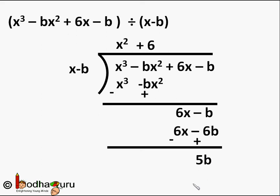And that is exactly what we got before — 5b as the remainder. So we proved the Remainder Theorem really gives us the remainder without actually performing the long division. That's all for now. Bye-bye.